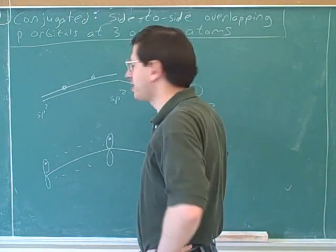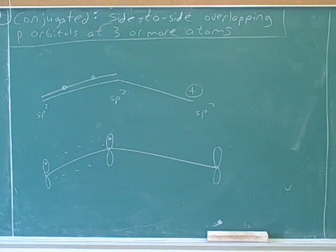So this is a conjugated system. You can see that if we draw the other resonance structure here. Can you use electron-pushing arrows to draw the other resonance structure? Don't forget that there's a positive charge on the right-hand carbon.